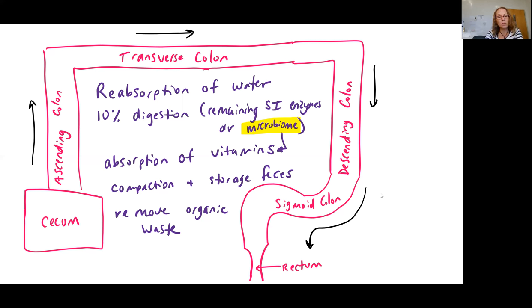The microbiome is also responsible for producing some key vitamins that can then be absorbed here. So really you have just a small amount of nutrient and vitamin absorption happening at the large intestine, a significant amount of water reabsorption happening at the large intestine. And then we are seeing some removal of organic waste products happening with this organ as well.